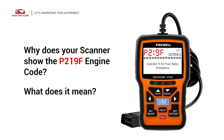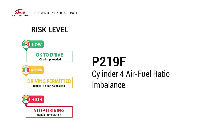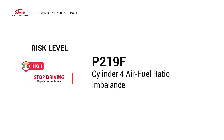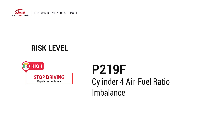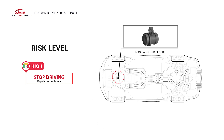Why does your scanner show the P219F engine code? What does it mean? P219F is a diagnostic trouble code for cylinder 4 air-fuel ratio imbalance. It indicates that the PCM has detected an error in cylinder number 4 air-fuel ratio imbalance — meaning the air-fuel mixture in cylinder number 4 is significantly different from the other cylinders in the engine.